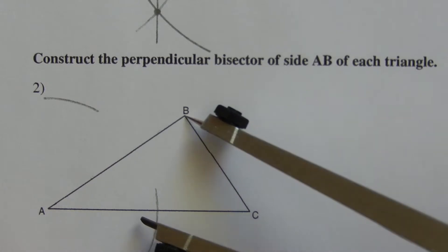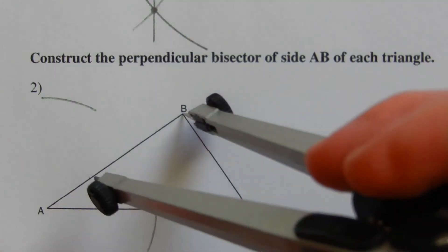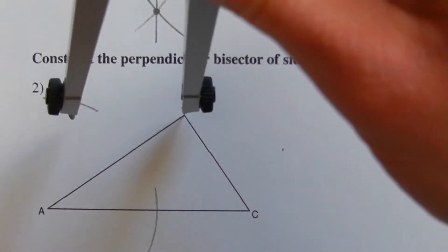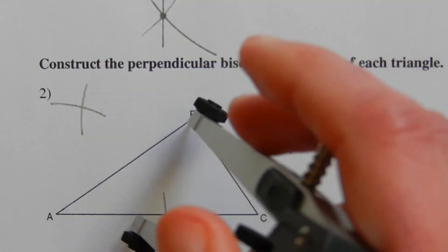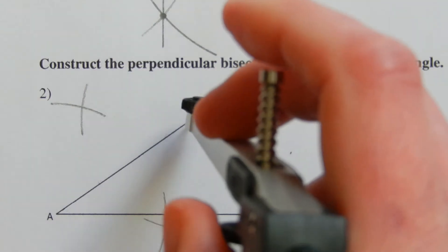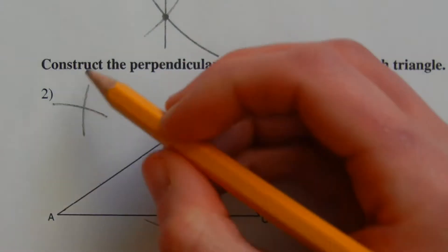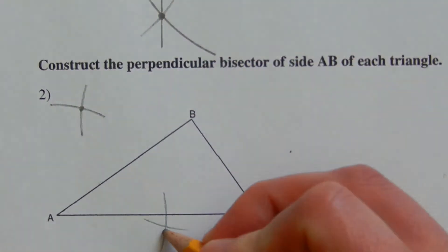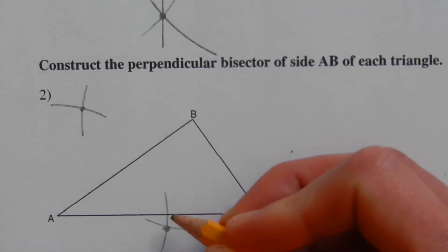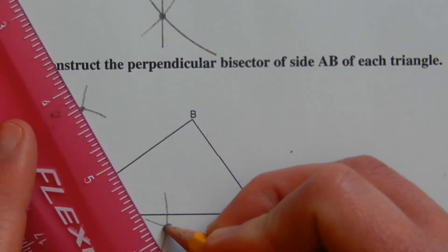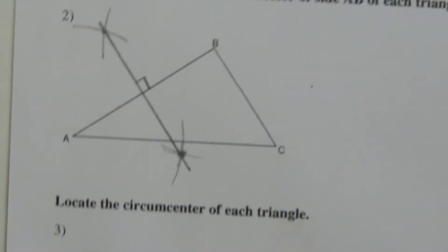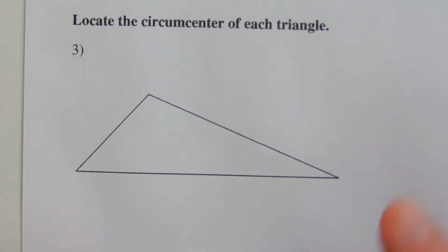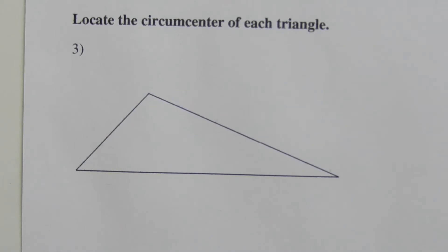Starting from endpoint B, since we're drawing a perpendicular bisector of AB, we have to create our mark above and then below that line. Now that we have our intersection we have two points that we can connect to form that perpendicular bisector.